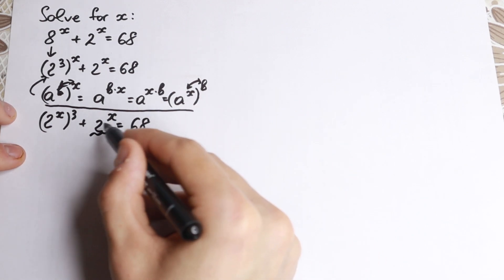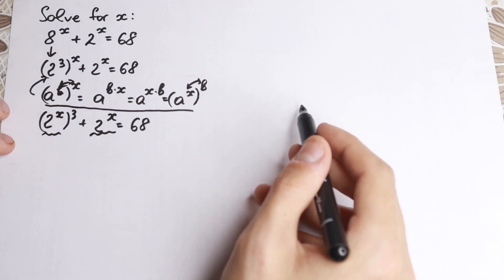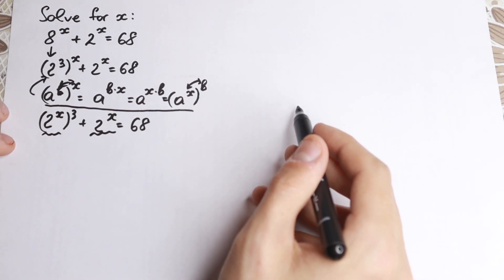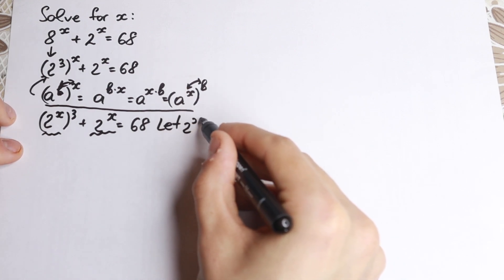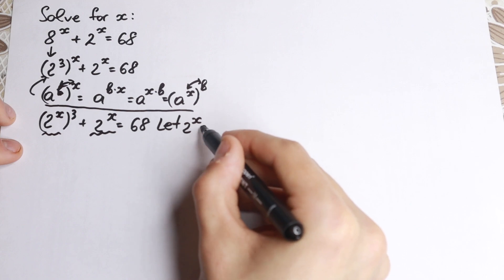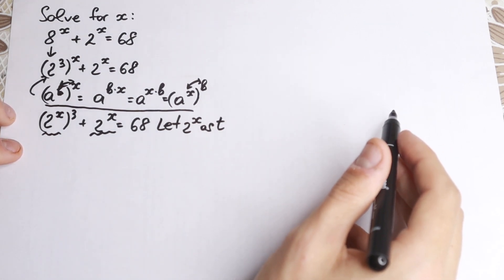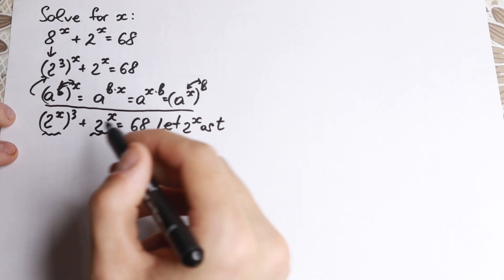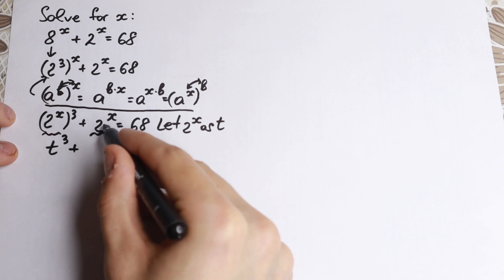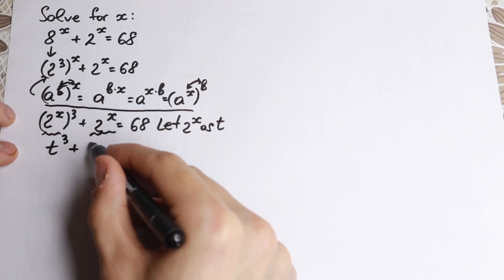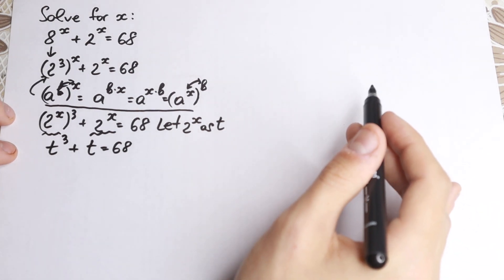Take a look closely — we have 2 to the x and we have 2 to the x right here. So it's a really good moment to apply a substitution: let our 2 to the x equal to t. So the main common letter is t. And right now we will have t cubed plus t equal to 68. So this is our substitution.